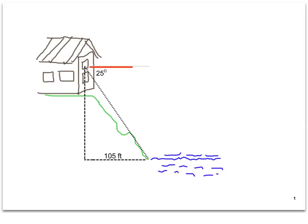Because I know that horizontal at the second story window and horizontal at the water's edge are parallel, I know that if this is a 25-degree angle, it is also a 25-degree angle down here because the horizontals are parallel.